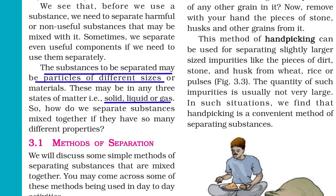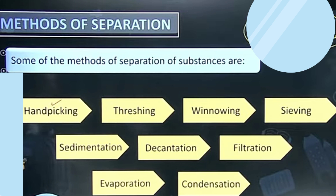The substances to be separated may be particles of different sizes or materials. These may be in any of the three states of matter — solid, liquid, or gas. So how do we separate substances mixed together if they have so many different properties? Here are the separation methods that you may come across in day-to-day life.